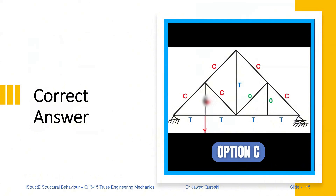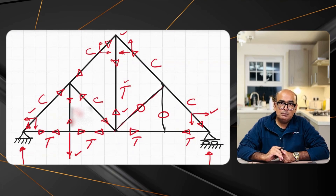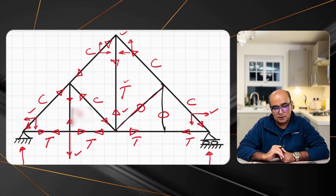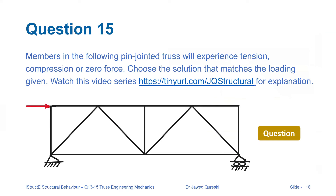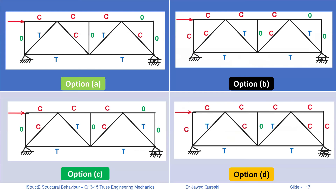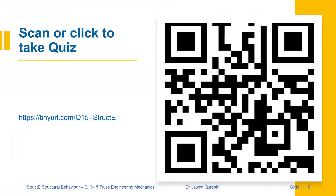Let me know if you got this question right. Let's move on to our third example — this one is a little bit tricky. Members in this truss are again subjected to tension, compression, or zero force. Which members are zero force members? There are four options. Pause the video and have a go, and let me know your answer. You can take the quiz at the URL in the description or by scanning the barcode.